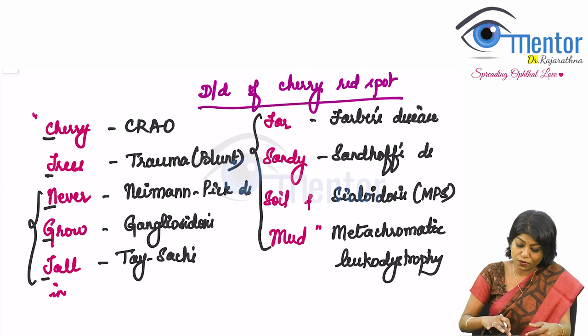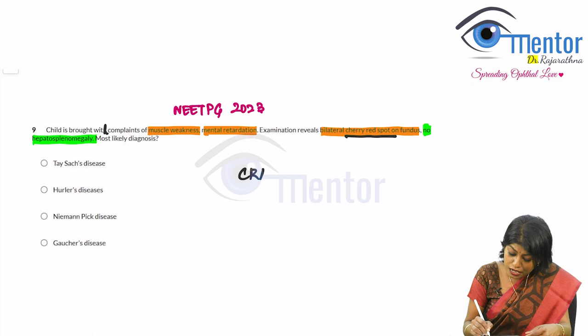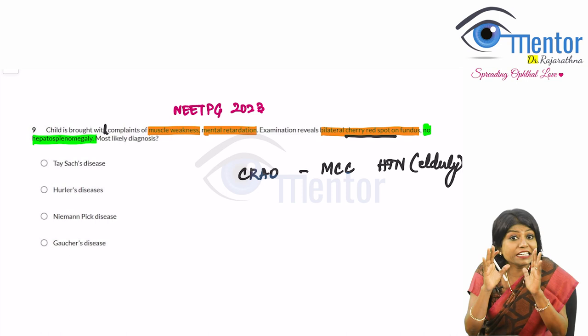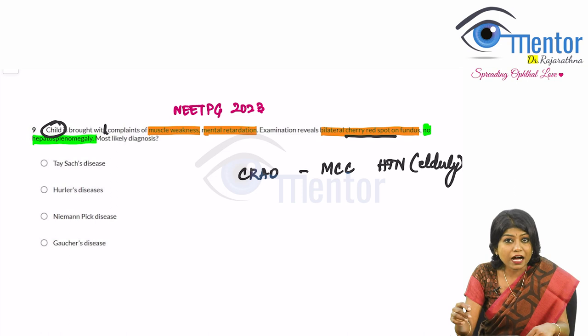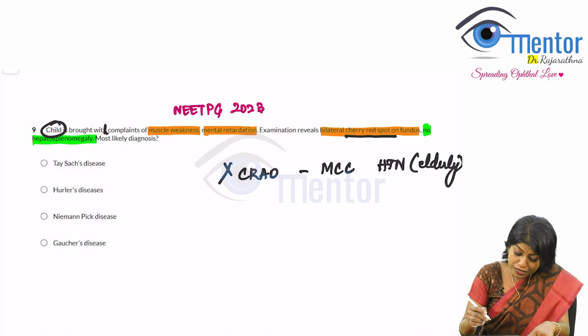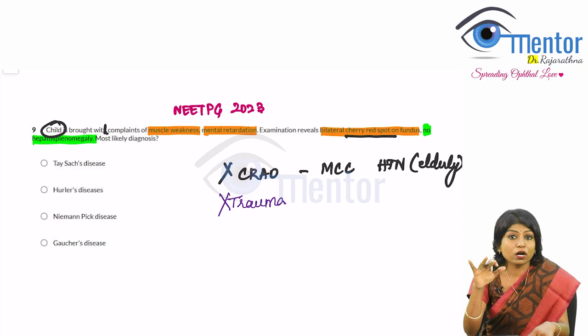Looking at the question again, we can rule out CRAO because the most common cause is hypertension or atherosclerosis, typically seen in elderly or young adults — not in a child. Central retinal artery occlusion is extremely rare in children. Trauma is also ruled out since there is no history of blunt trauma given, and it is not among the four options.